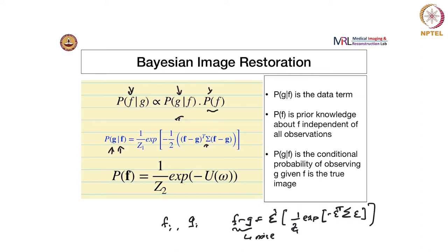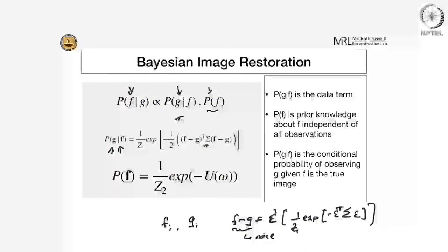Z1 is the normalizing factor for the Gaussian distribution. Now, if we assume that all the pixels in the image are independent of each other — each drawn from this distribution independently with the same variance — the equation simplifies to the following.